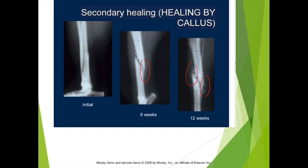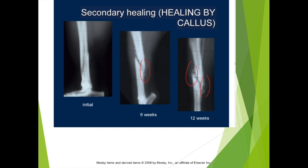Then osteoclasts come onto the scene — we know osteoclasts are good for destroying tissue — and they chew away at the bone and remodel it to look like normal bone. In a fairly fresh fracture, within the first few months after healing, you can typically feel a big bone callus on the bone. Over time it reduces thanks to those remodeling osteoclasts. The phases are: hematoma formation, inflammation with white blood cells, soft callus forming, hard callus forming, and finally remodeling by osteoclasts.